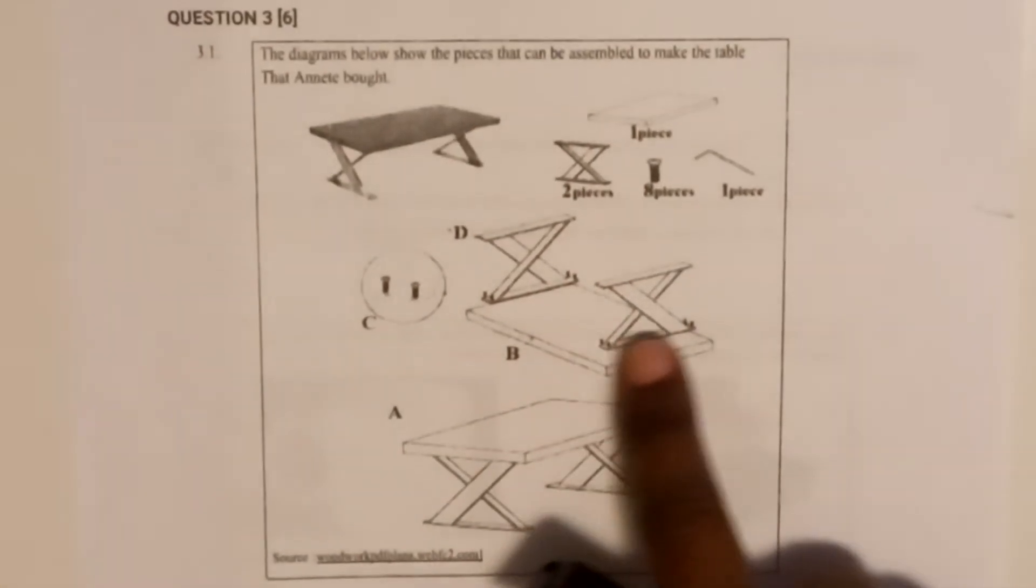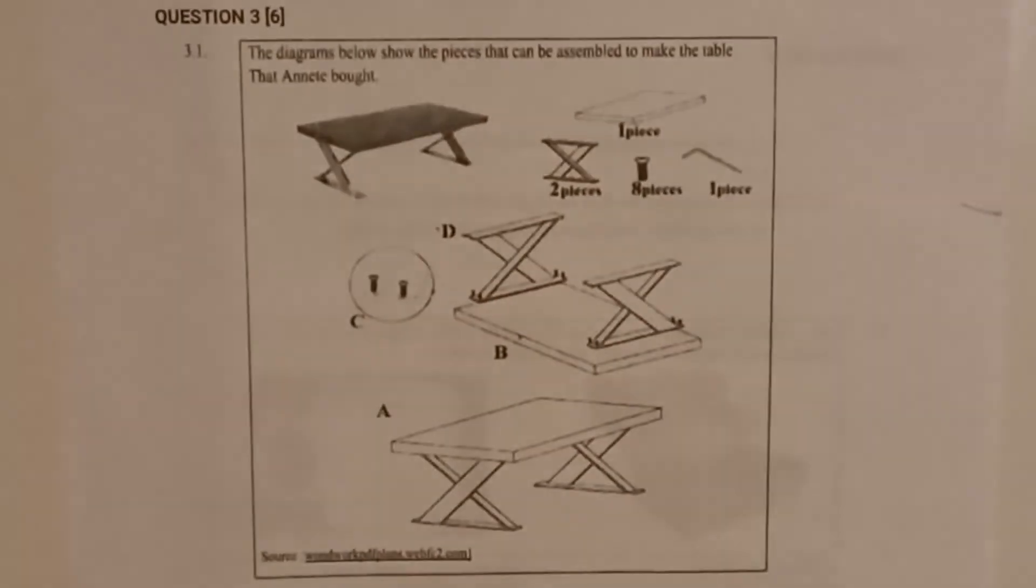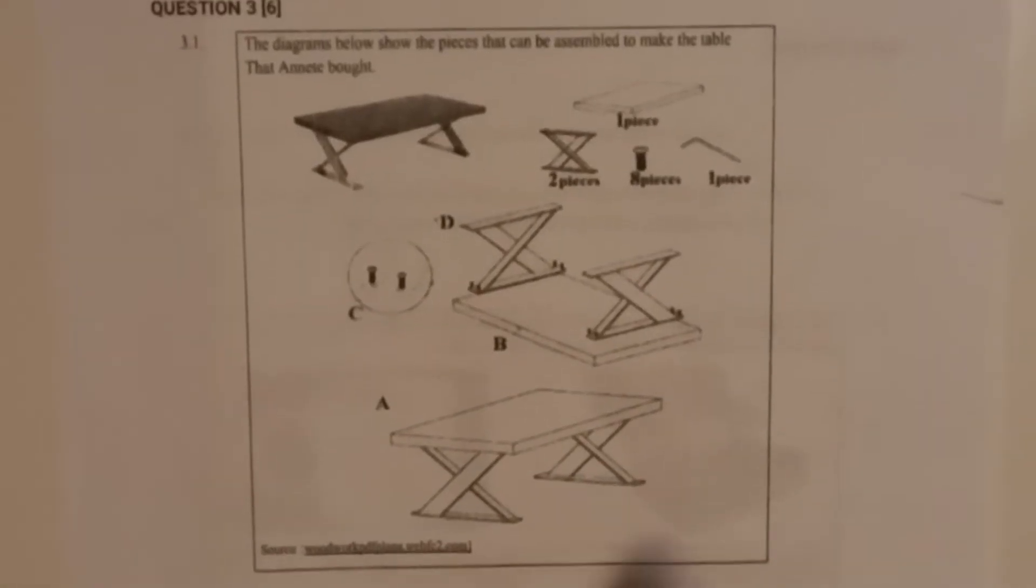I'm going to count them: one, two, three, four, five, six, seven, eight - they're eight, they've written it for you. And then there's this one piece of connecting that you're going to use to connect this table, so there's one piece of that.